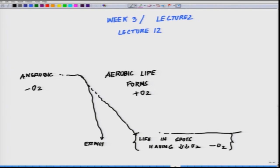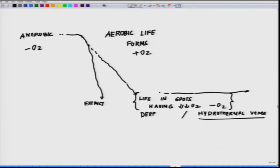Or started having a life in spots having very low oxygen or no oxygen. This is where you see places like hydrothermal vents or deep inside the earth crust and there are bacteria which can do it, which can make food from H2S.